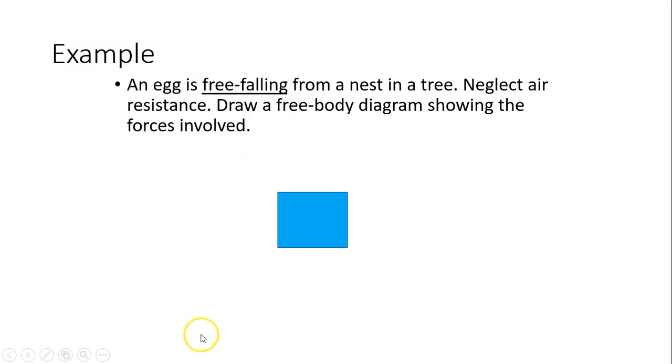If anything is free falling, the only force acting on it is gravity. So from the center of the box you draw a line going down and label it F_g. This is called a free body diagram. That's all the forces acting on the free falling egg.